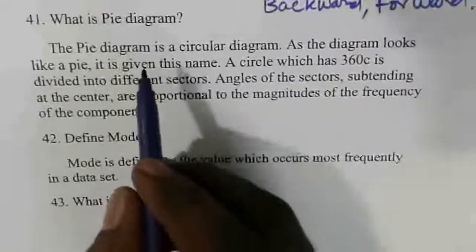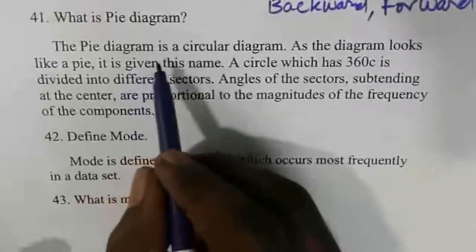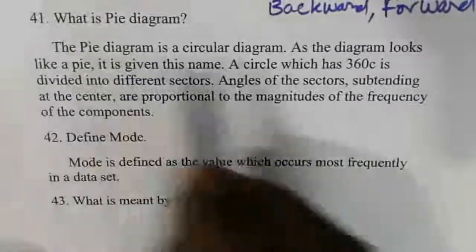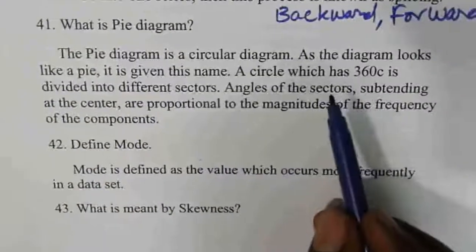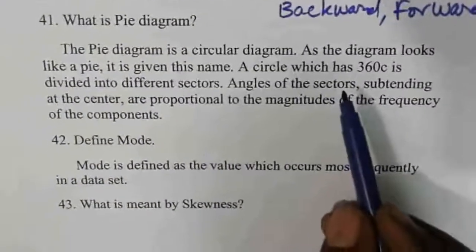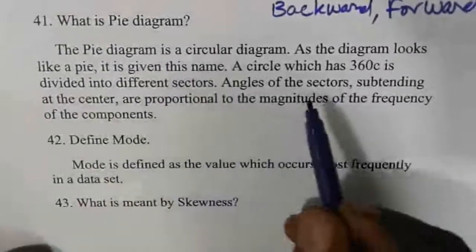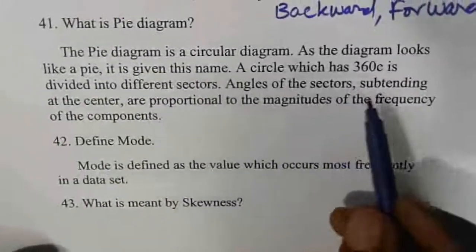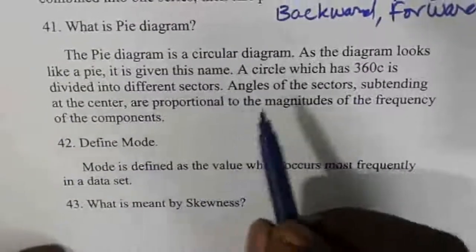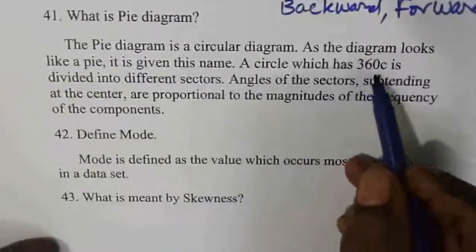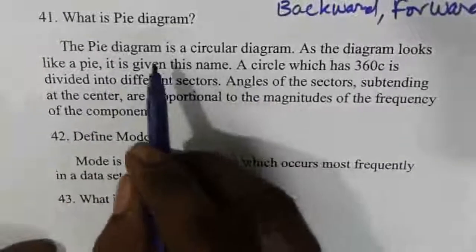Pie diagram is a circular diagram. You draw a circle, plot the values, calculate the degrees for each component, and represent the data within the circle. The degree is the basis for drawing each segment of the pie diagram.